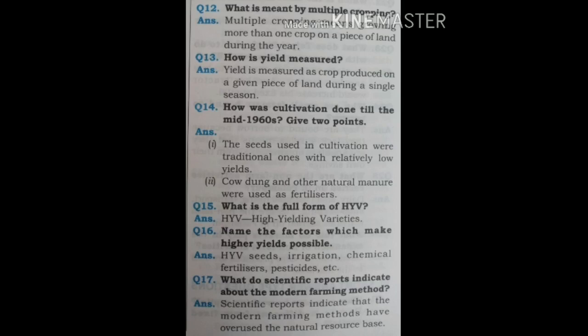Question 14: How was cultivation done till the mid-1960s? The seeds used in cultivation were traditional ones with relatively low yields. Cow dung and other natural manure were used as fertilizers. Question 15: What is the full form of HYV? HYV means High Yielding Varieties.